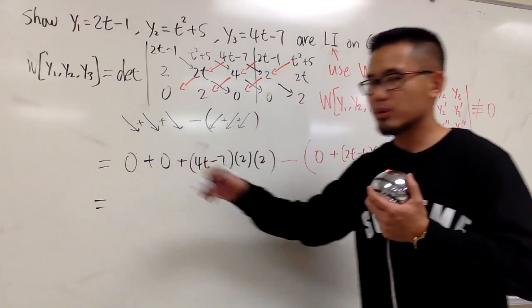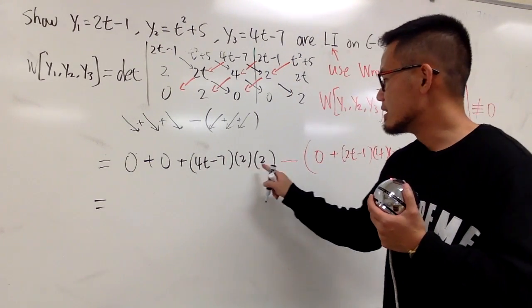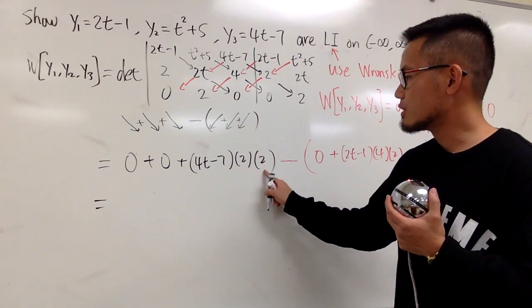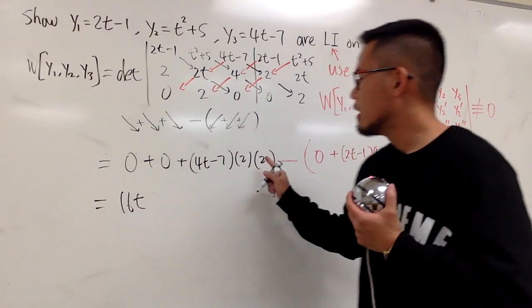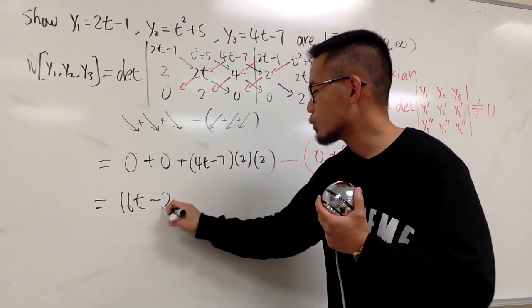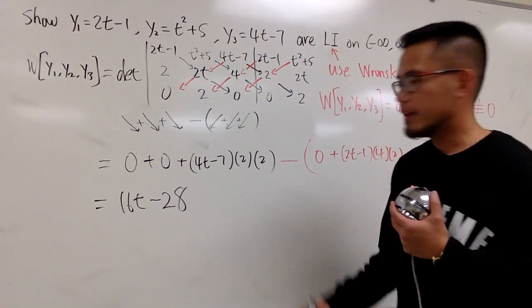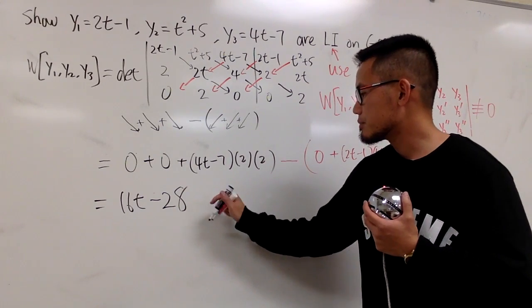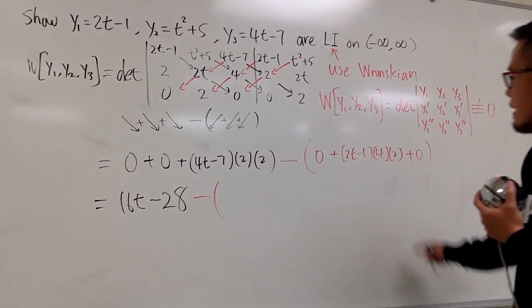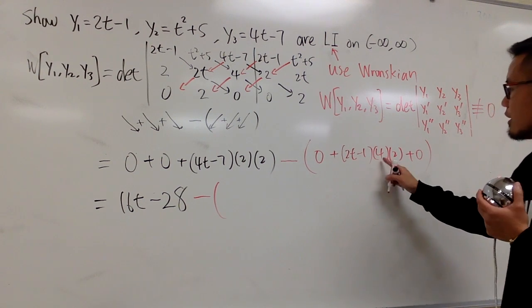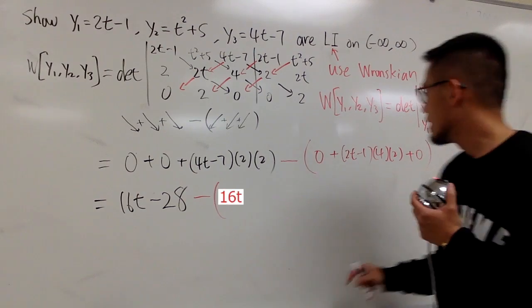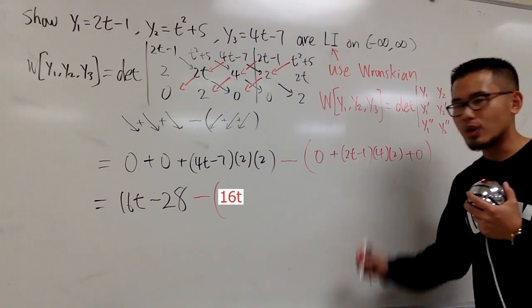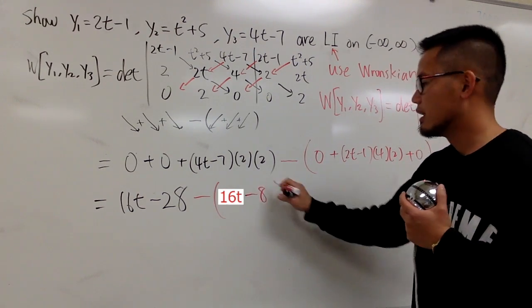Okay, so 0, 0 don't matter. And this is 4. 2 times 2 is 4, times 4t is 16t. 4 times negative 7 is minus 28. And then let me put down the minus. Okay, so I have to worry about this term. Check this out: 4 times 2 is 8, 8 times 2t, and then 8 times minus 1 is minus 8.